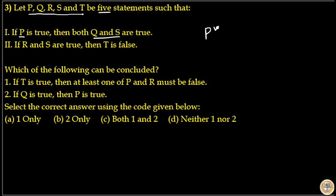That is, when P is true, both Q and S are true. If R and S are true, then T is false.